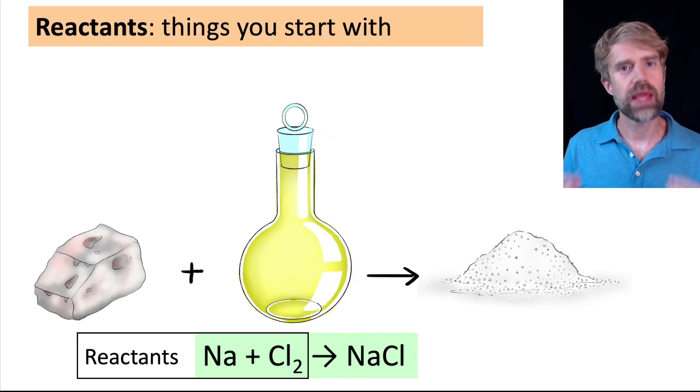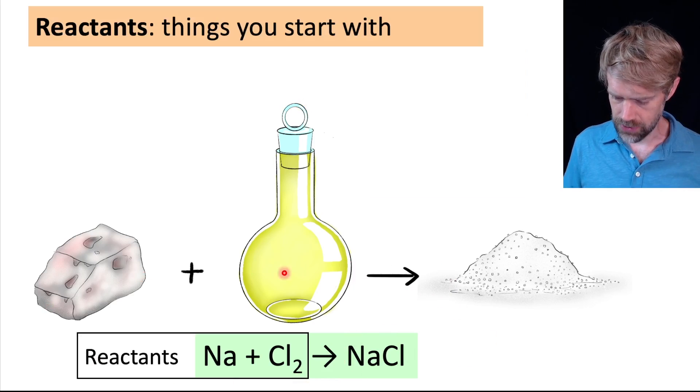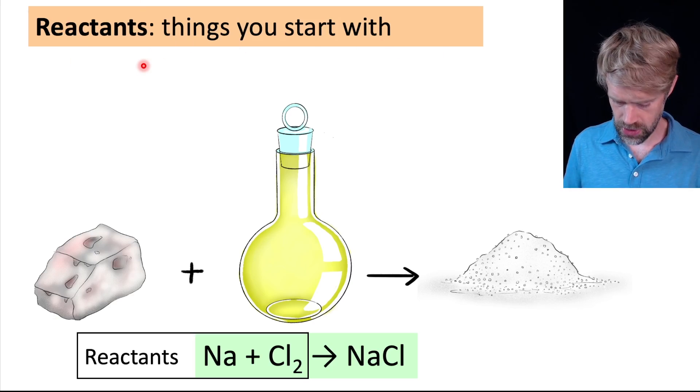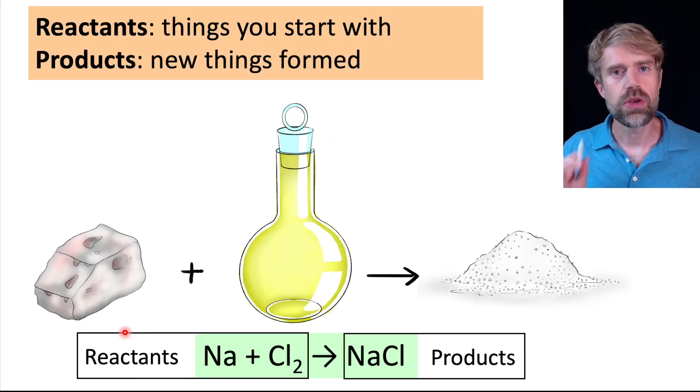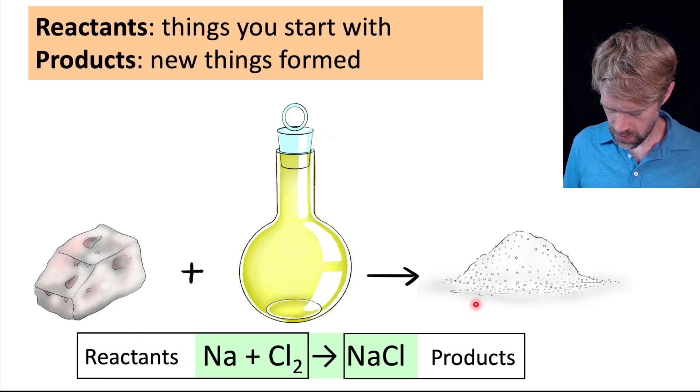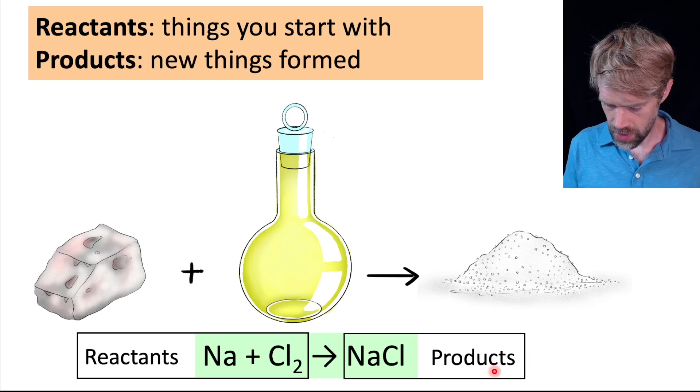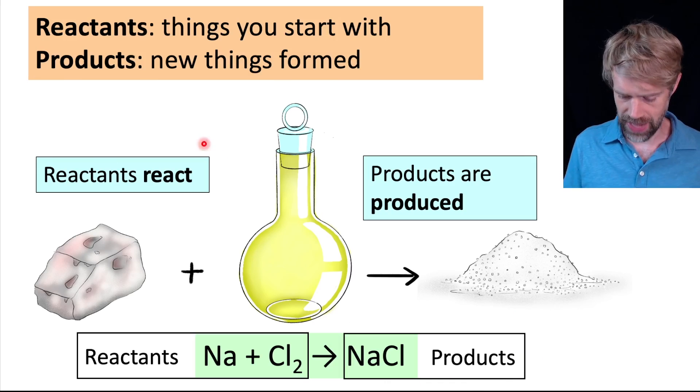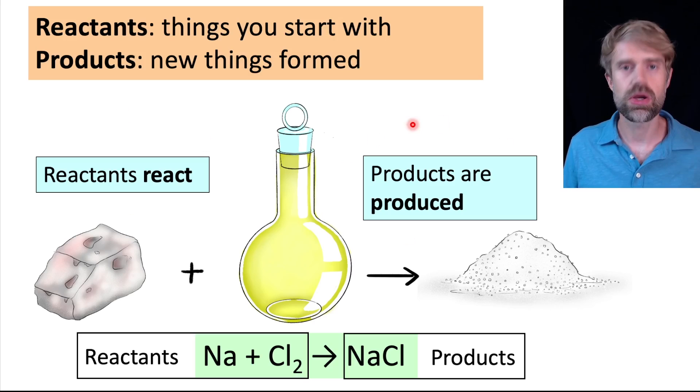We have a special name for the substances in a chemical reaction. The things you start with are called the reactants. So, in this reaction, sodium and chlorine are the reactants. The new substances that are formed are called products. So here, sodium chloride, NaCl, is the product. A good way to remember this is that reactants react and products are produced. Reactants are what you start with. Products are what you end up with.